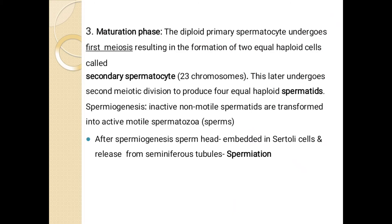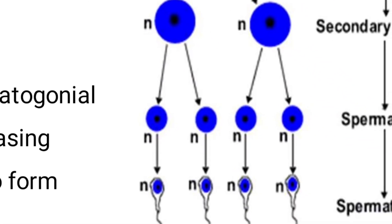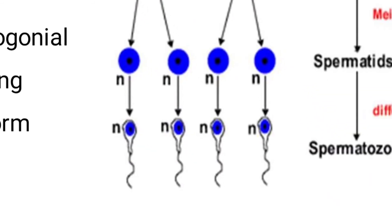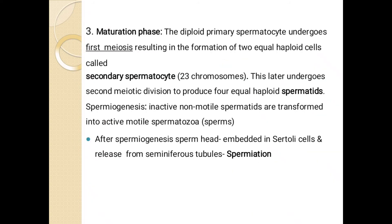In spermiogenesis, inactive non-motile spermatids will be transformed into active motile spermatozoa. Here the circle-like structure you can see — these are spermatids but they are non-active, non-motile, not movable — they will be converted into active and motile spermatozoa.